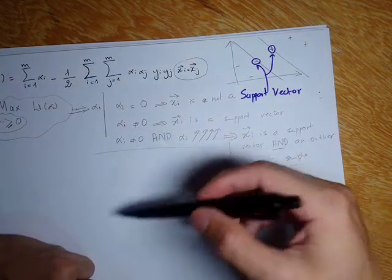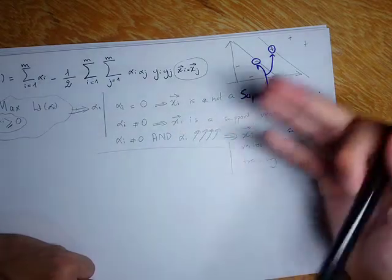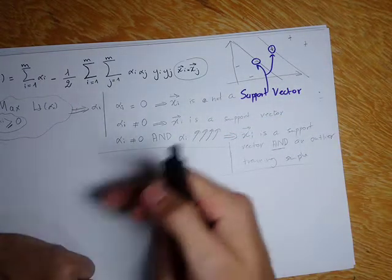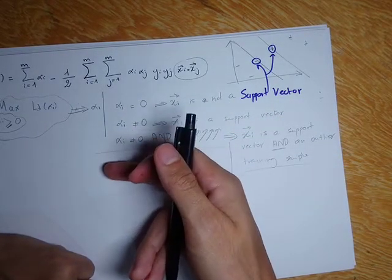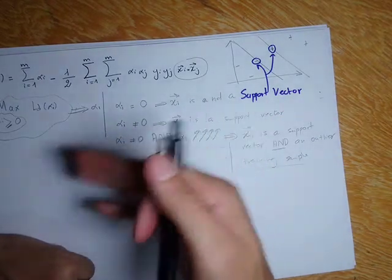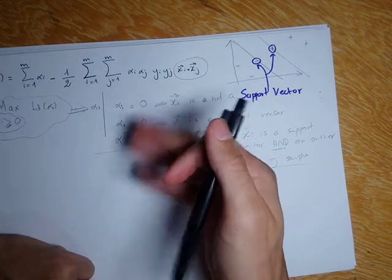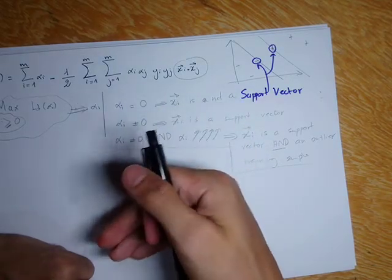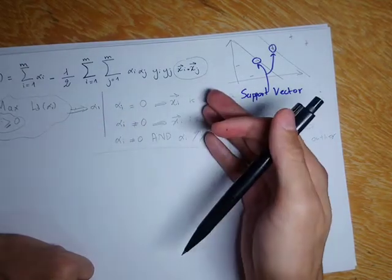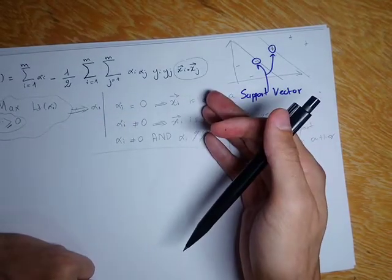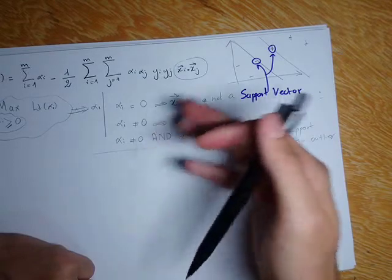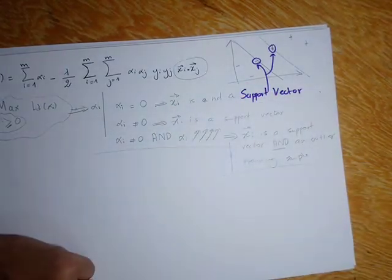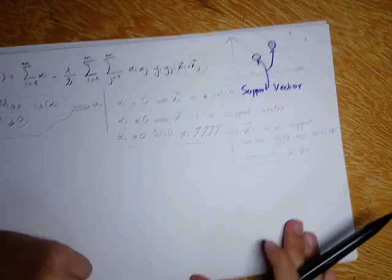So basically we can identify the support vectors using just the values of alpha_i, and this is useful to find the value of b.